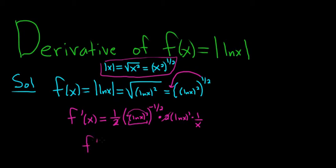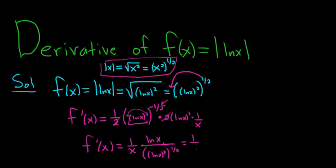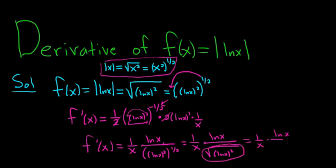The two's cancel, so we have f prime of x equals one over x times ln x on top. The bottom piece comes down with the exponent becoming positive — it's ((ln x)²)^(1/2). We can rewrite this as one over x times ln x, and the one half power on the bottom turns into a square root again: the square root of (ln x) squared, which is precisely the absolute value of the natural log of x. So f prime of x equals ln x over x times the absolute value of ln x.